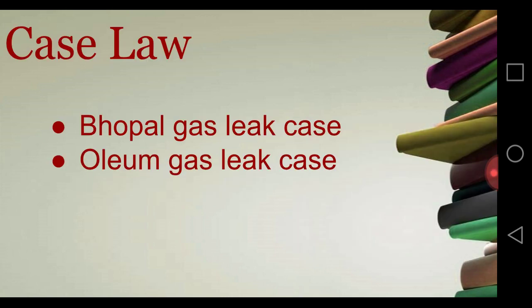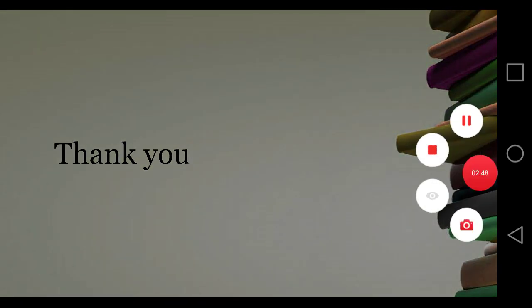There are some famous case laws for absolute liability. One is the Bhopal gas leak case, that is Union Carbide Corporation versus Union of India — the poisonous Bhopal gas case. The second one is M.C. Mehta versus Shriram Fertilizer Industries, which is the Oleum gas leak case. In both the cases, the principle of absolute liability was implemented.